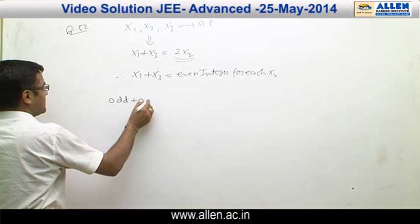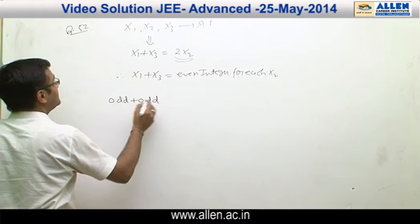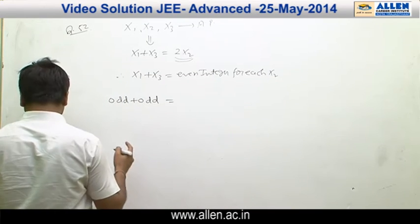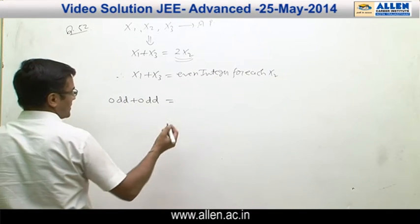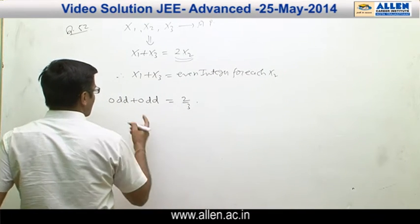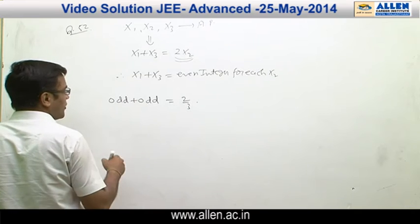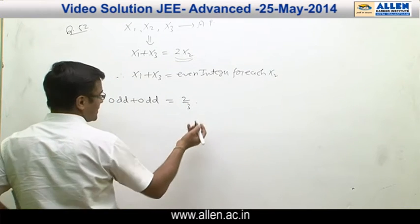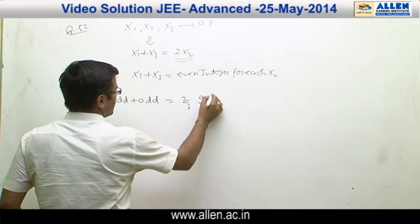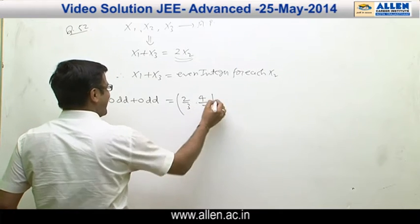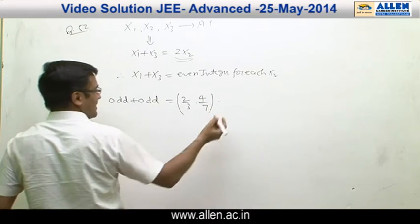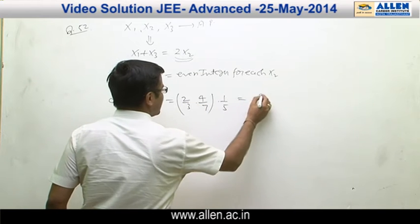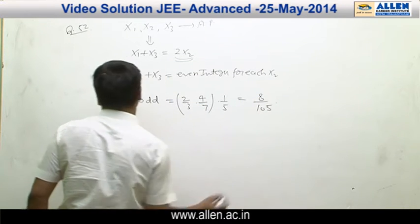First case: we consider when both numbers (X1 and X3) are odd. Odd number from box B1 — probability is 2/3. Odd number from box B3 — probability is 4/7. And any 1 number from box B2 — probability is 1. Wait, the probability becomes 1/5 — any one number from B2. This probability becomes 8/105.